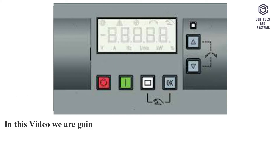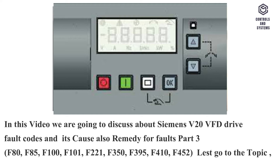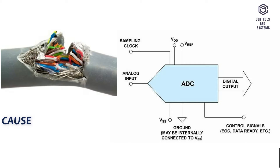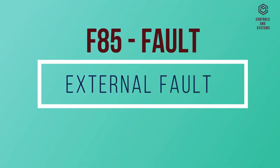In this video we are going to discuss Siemens V20 VFD drive fault codes, their causes, and remedies — Part 3. F80 Fault: signal lost on analog input. Cause: broken wire or signal out of limits.